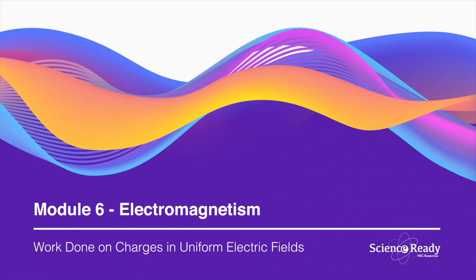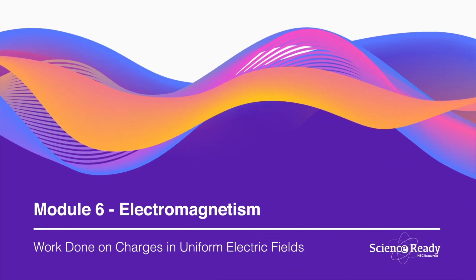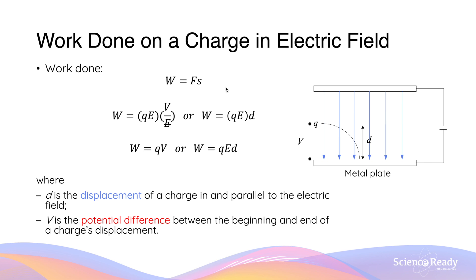Welcome to the video on the work done on charged particles in uniform electric fields. The work done on a charged particle inside the electric field is defined as the amount of energy that the electric field is giving to a charged particle as it enters the electric field. The work done equation is given by the force acting on a charged particle multiplied by the displacement that results from the force.